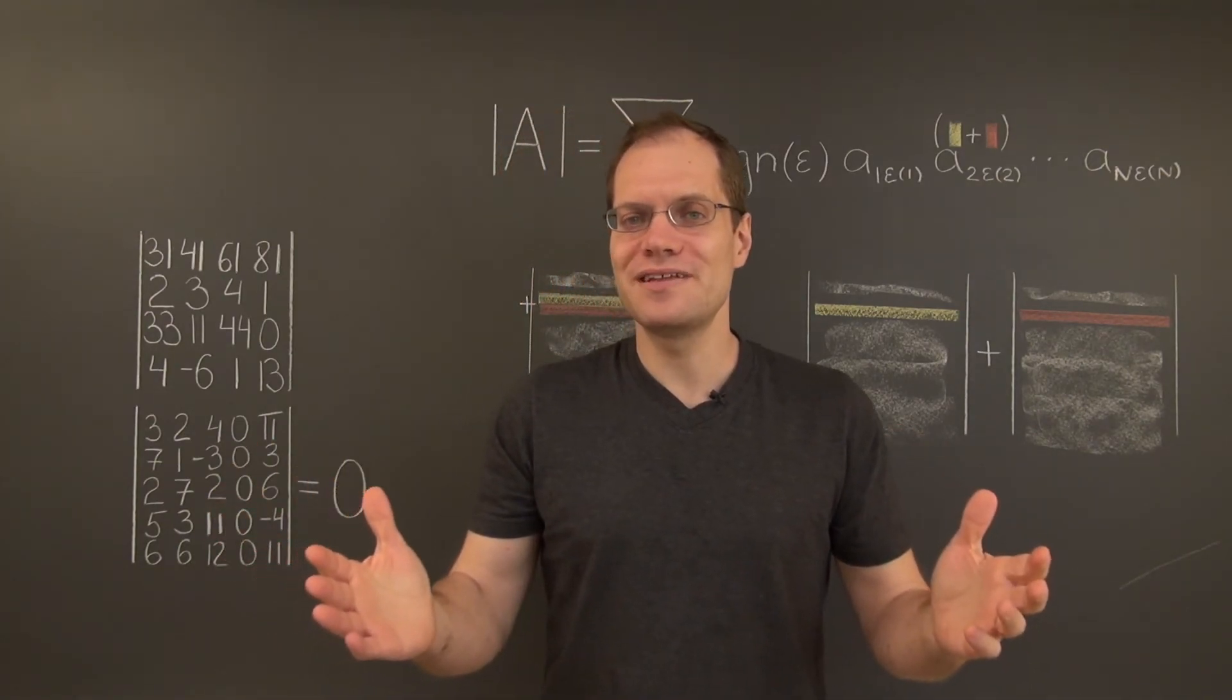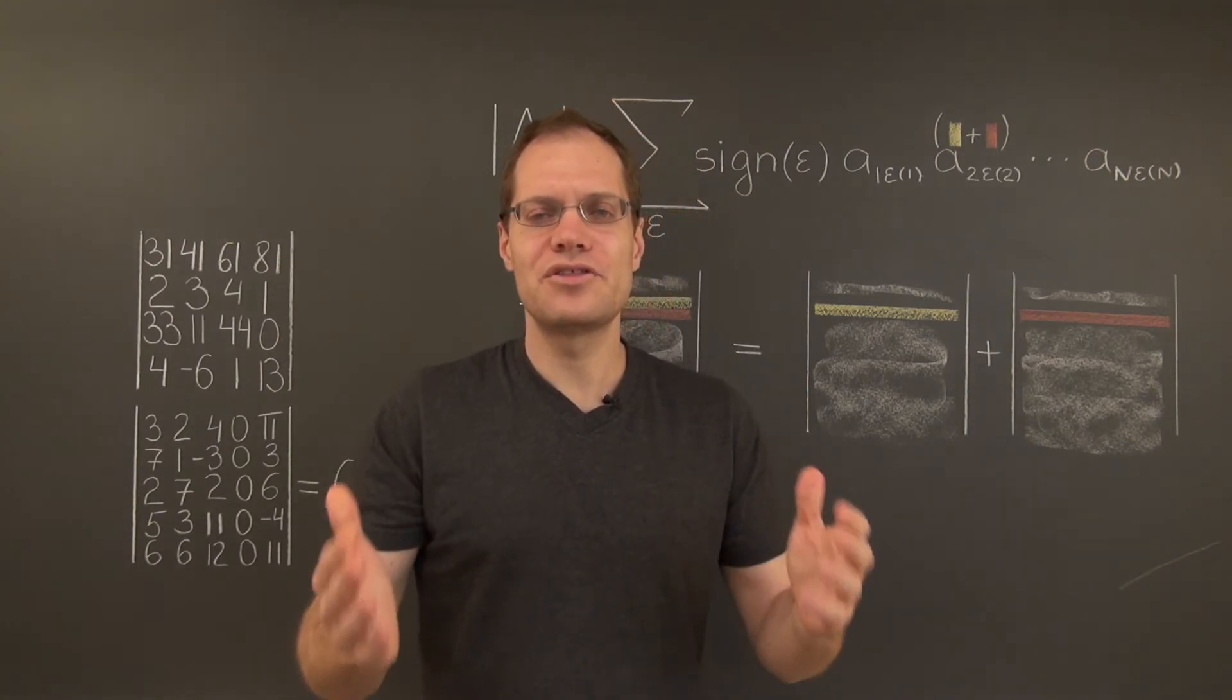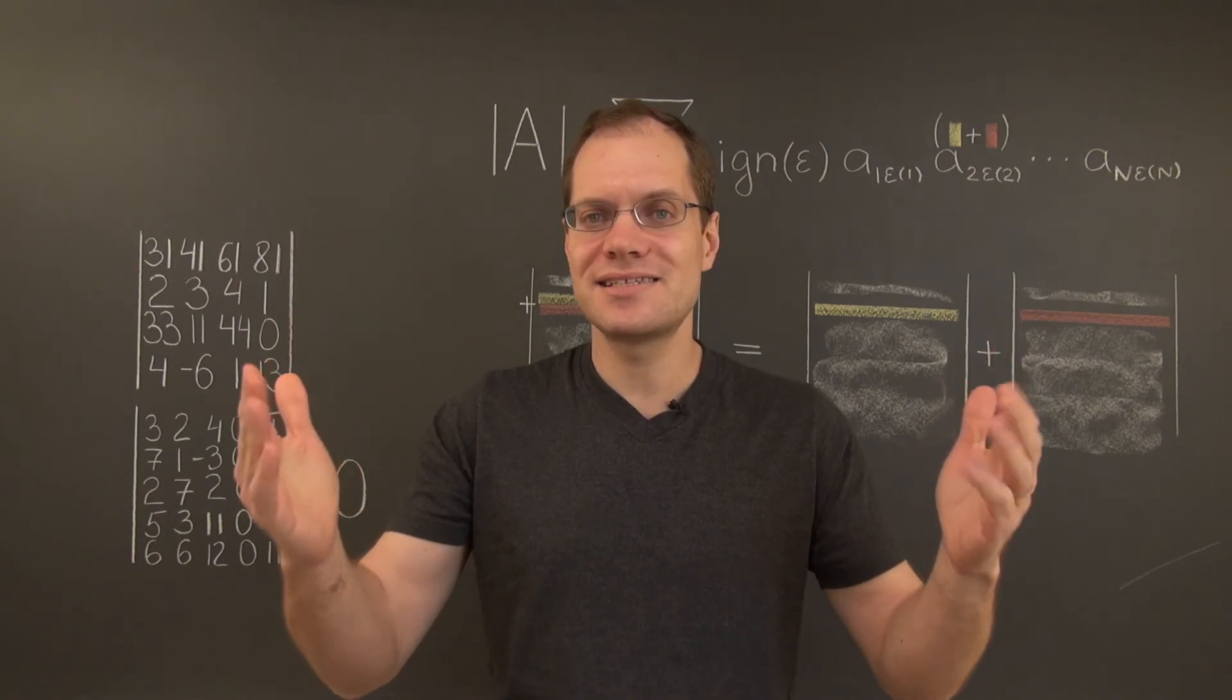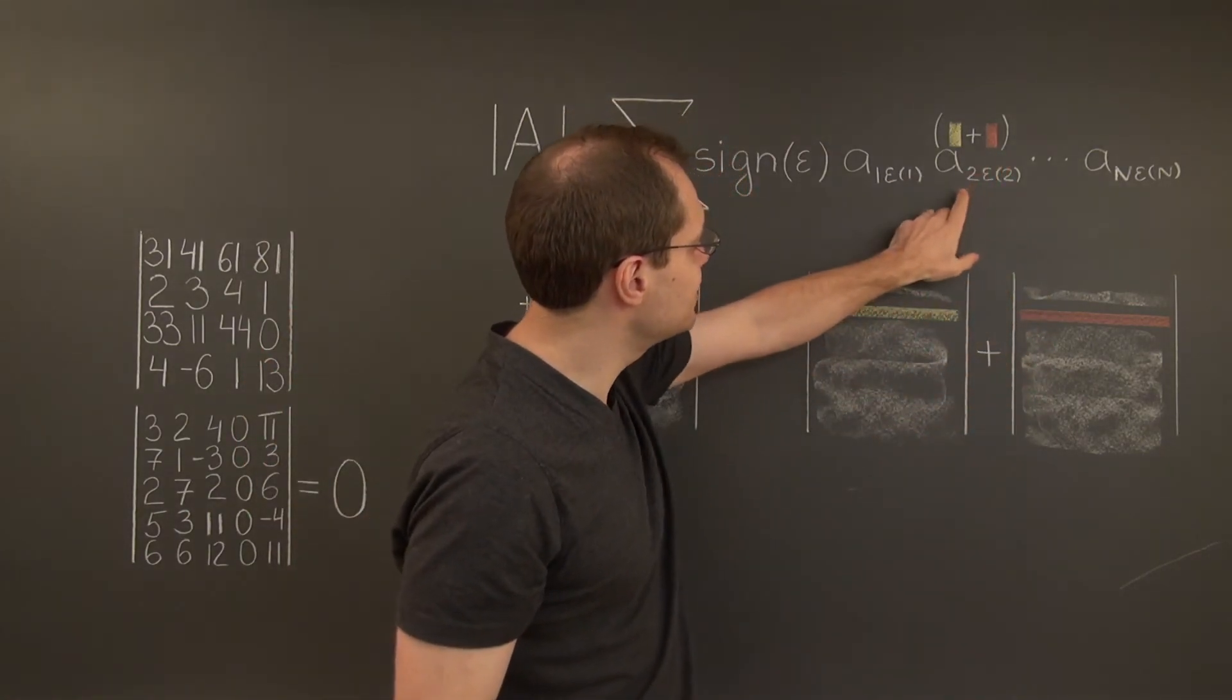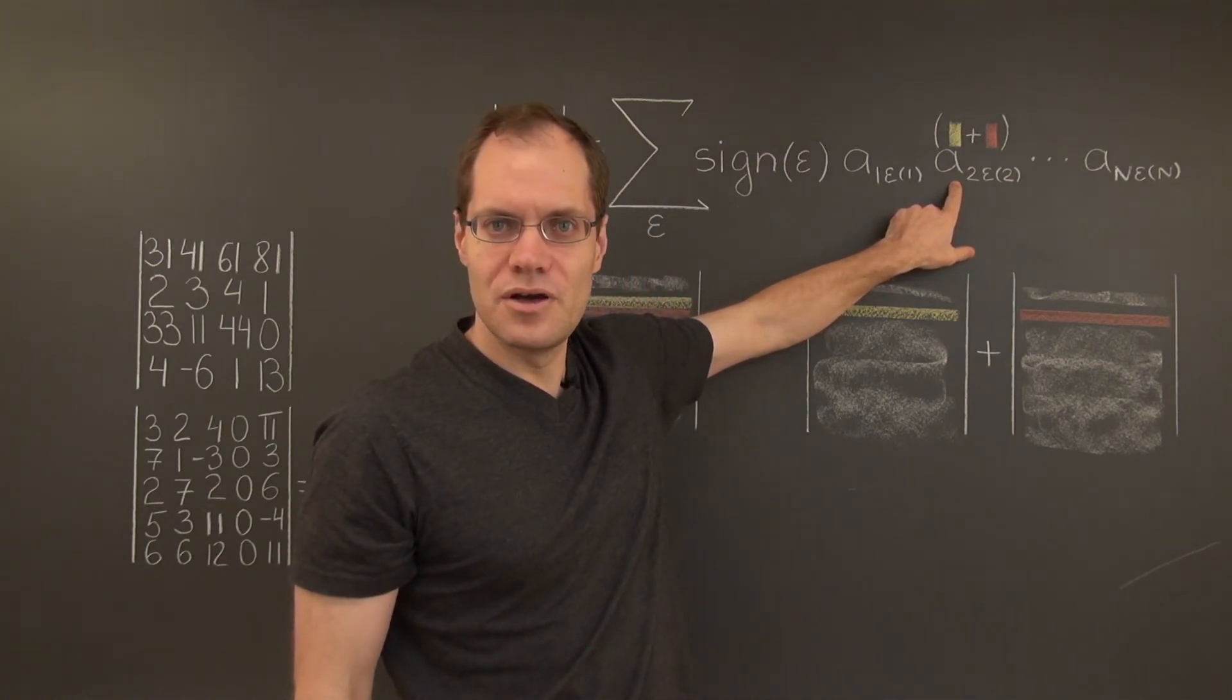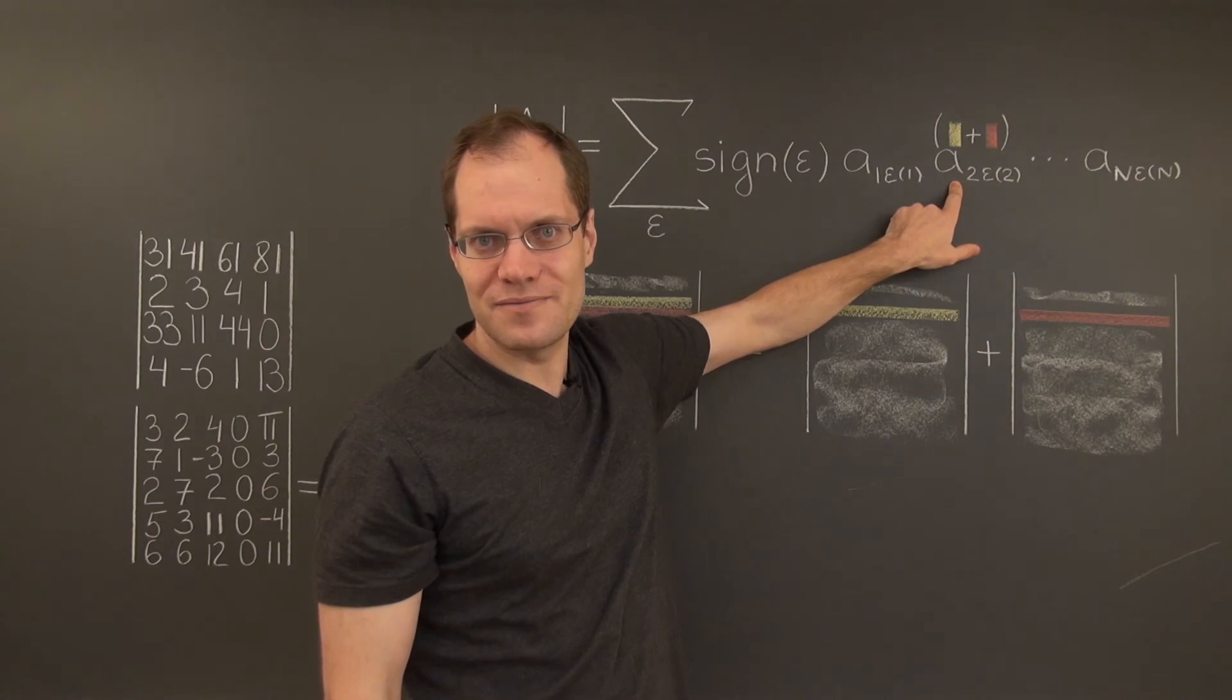The second part of linearity is perhaps even more straightforward. When you think of a row as a number times a vector, let's once again say that it's the second row. Then this entry in each term, this factor in each term, will be that number times the corresponding entry in the vector.